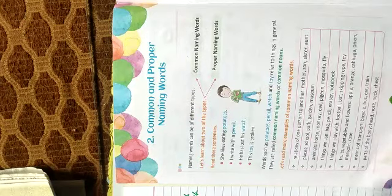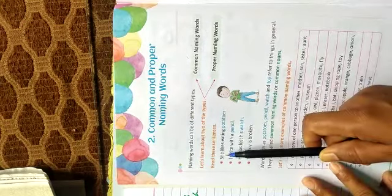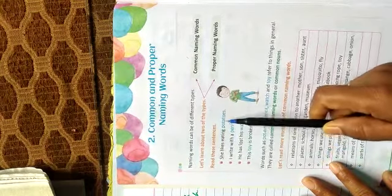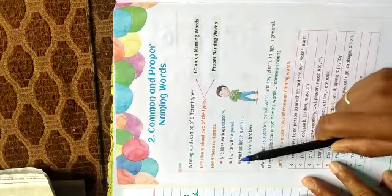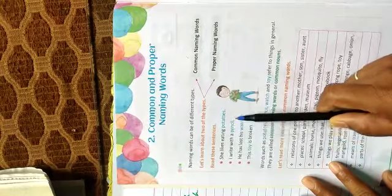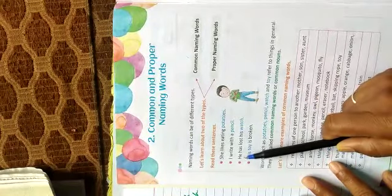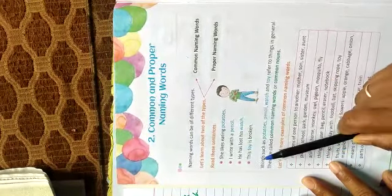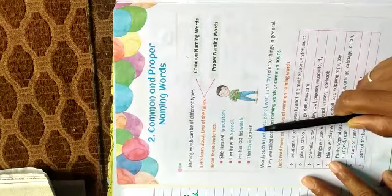Let's read these sentences. She likes eating potatoes. I write with a pencil. He has lost his watch. This toy is broken.